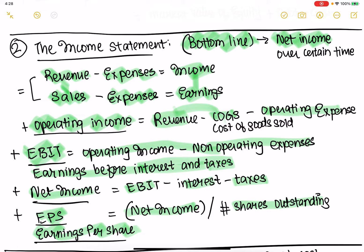Net income divided by shares outstanding gives EPS. So if EPS is $2, meaning for every share you get $2, and if the share price is $200, that means you're making about 1%. So from the income statement, you can get operating income, net income, and earnings per share.